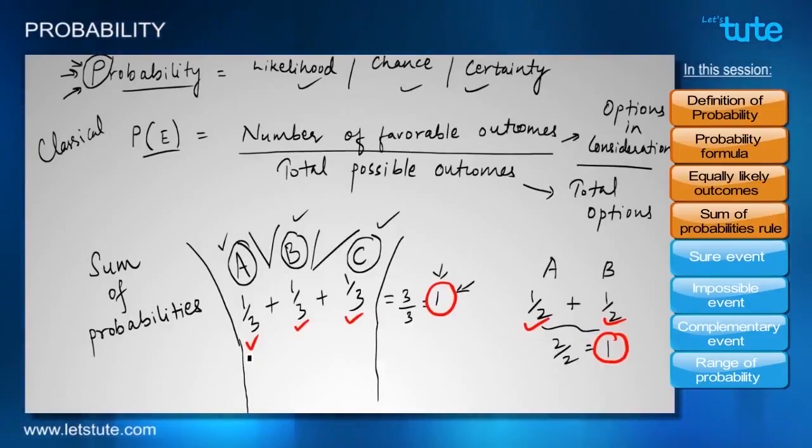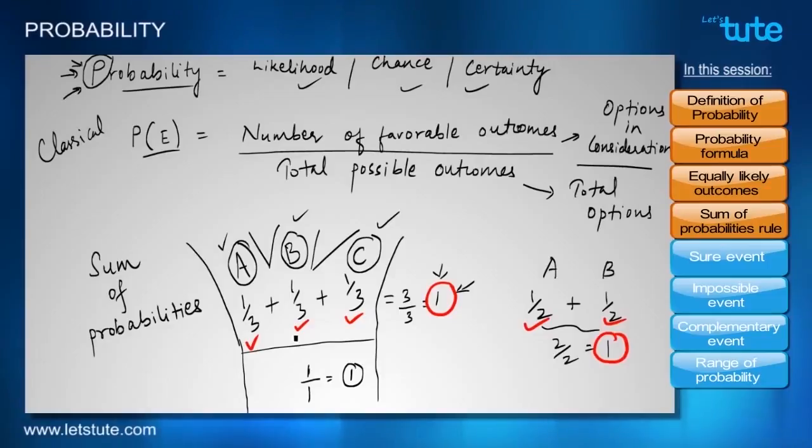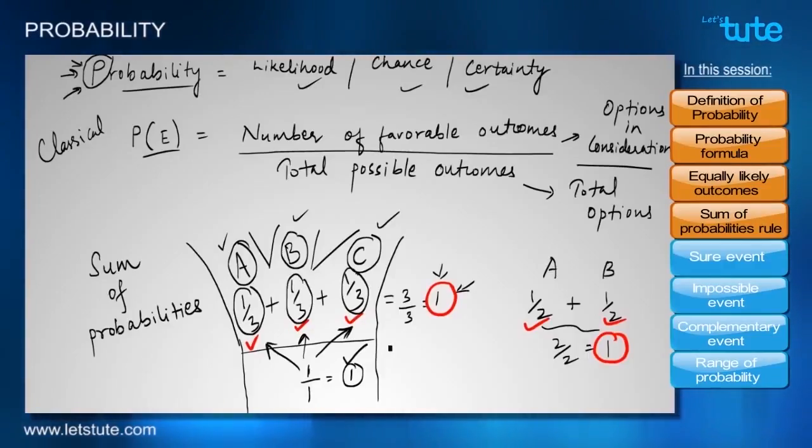But why does it happen this way? Because if we notice, when there was only one road, there was only one option ahead of us and that option was favorable to us, so the ratio was 1 by 1, which is equal to 1. Now when the road got diverged into many other roads, the probability also gets distributed. So when we add these distributed probabilities, then naturally we get a total probability of 1.